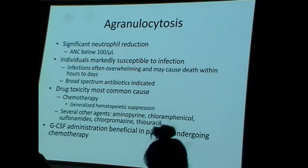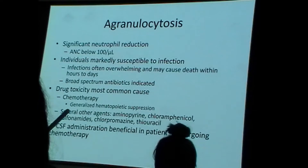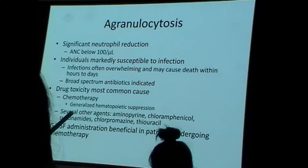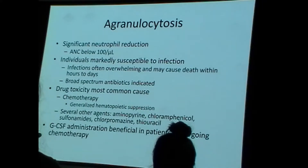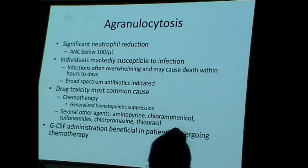This leads to the term agranulocytosis. Agranulocytosis is basically extremely severe neutropenia — it is more or less a functional absence of circulating neutrophils. From a laboratory standpoint, you can have an absolute neutrophil count near zero. The consequences for these individuals are a very marked susceptibility to infection. These individuals are at real risk for death; they really need intervention.